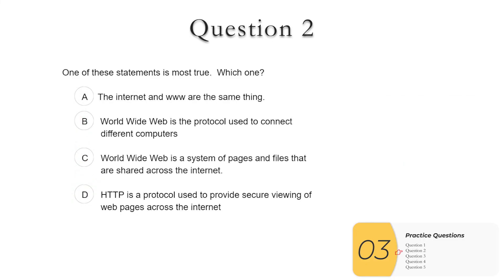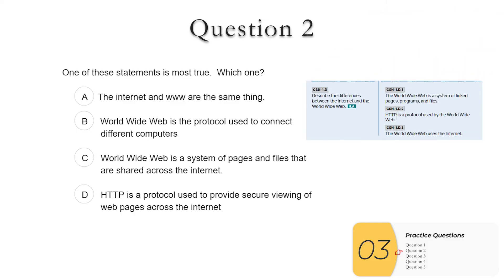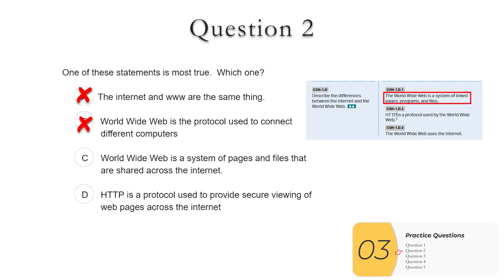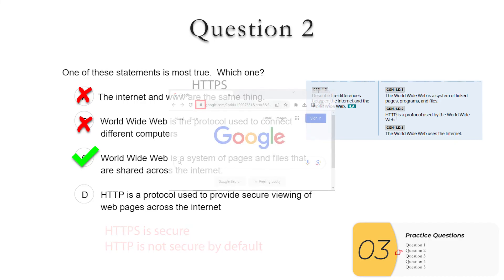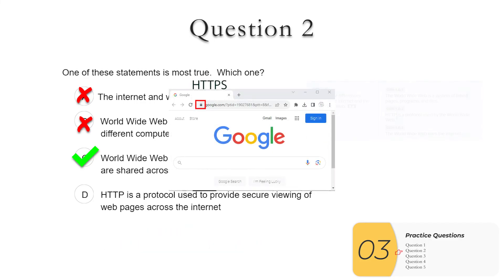Question two: which one of these statements is true? A: 'the internet and WWW are the same thing' — WWW stands for World Wide Web, and they are not the same thing. AP wants you to be able to distinguish between the three things: internet, World Wide Web, and HTTP. B: 'World Wide Web is the protocol used to connect' — no, HTTP is the protocol. C: 'World Wide Web is a system of pages and files that are shared across the internet' — this is the definition the AP board gives you, so this is true. D: 'HTTP is a protocol used to provide secure browsing of web pages' — the key word is 'secure.' HTTP is not secure; HTTPS is secure. Without HTTPS, anybody can read any messages going through. So D is not true, and the answer is C.